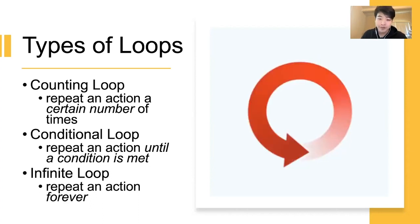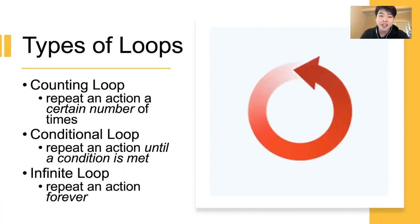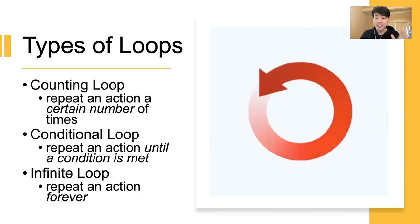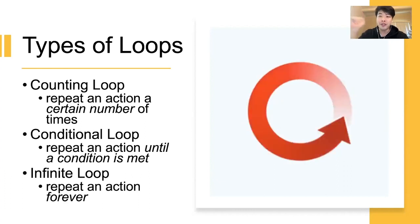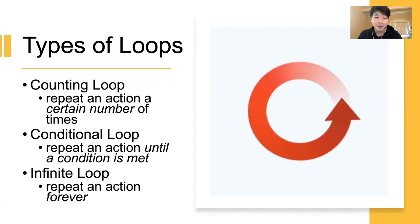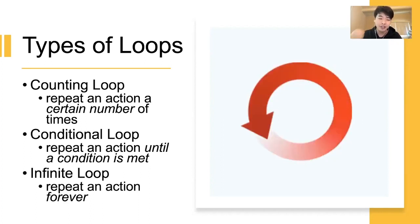A conditional loop — hopefully you can figure it out by the name. It repeats a sequence of actions until a condition is met. For example, you can say breathe until you die, or breathe until you cough — that's conditional. Or you can say: clean the room until your mom is satisfied. So that will be a conditional loop — you're repeating something until a certain condition is met.